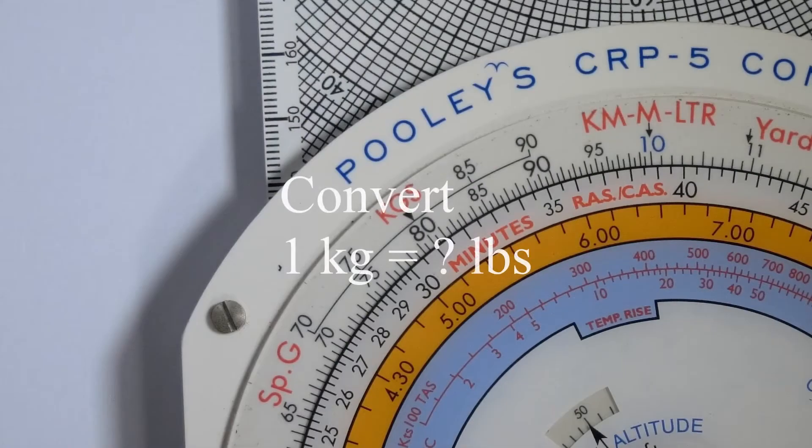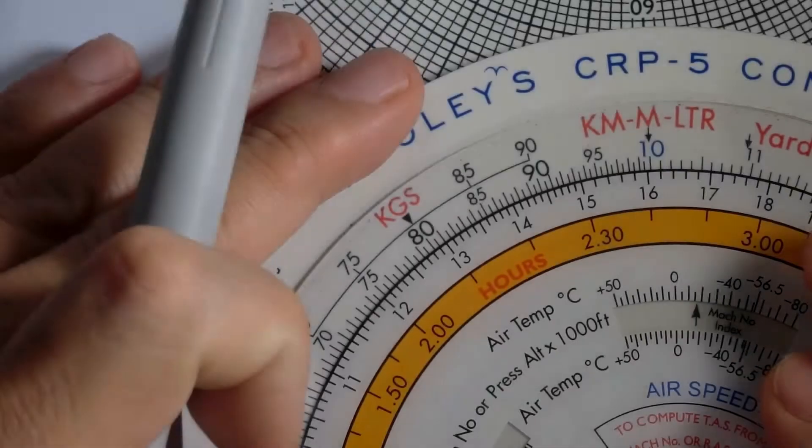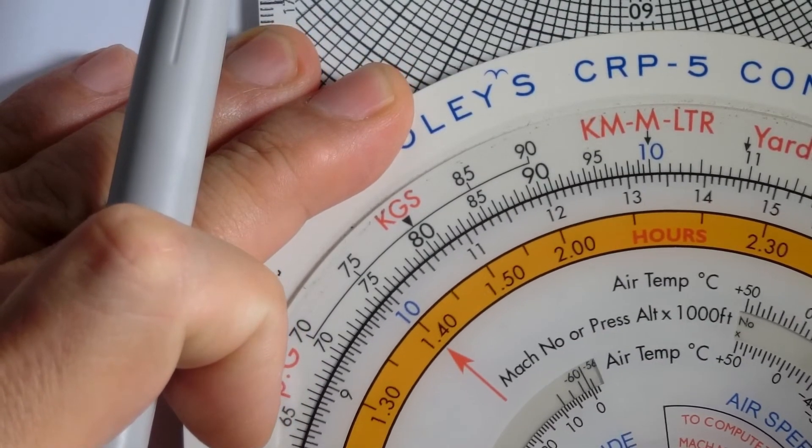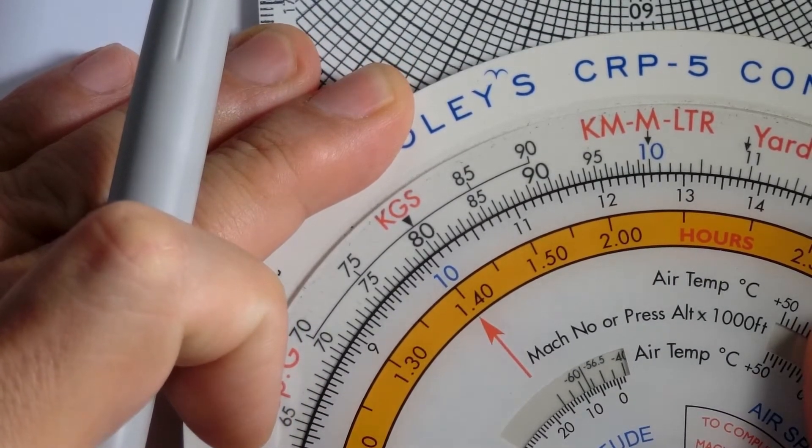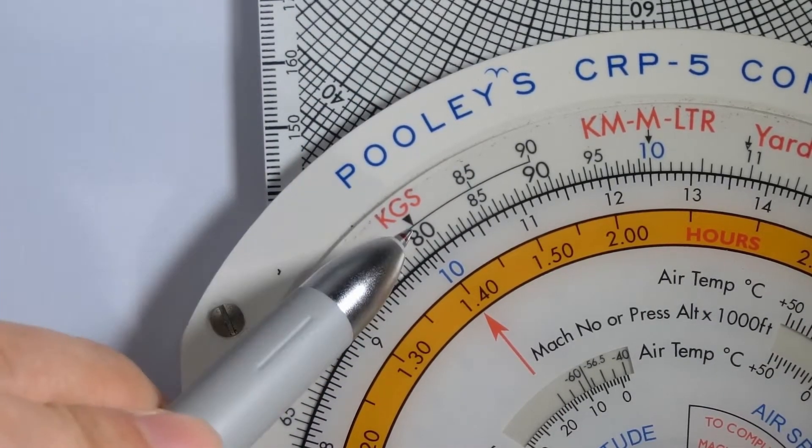Let's say we want to convert one kilogram into pounds. How do we do that? We rotate the inner scale so that one for one kilogram lines up with the black pointer under kilograms.